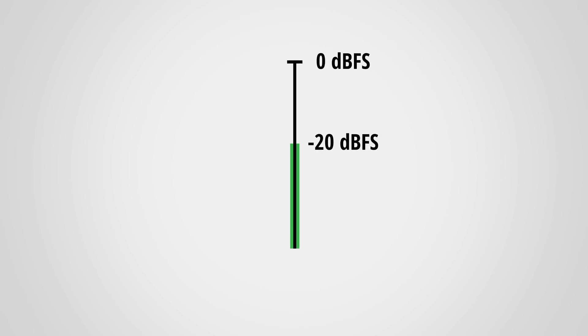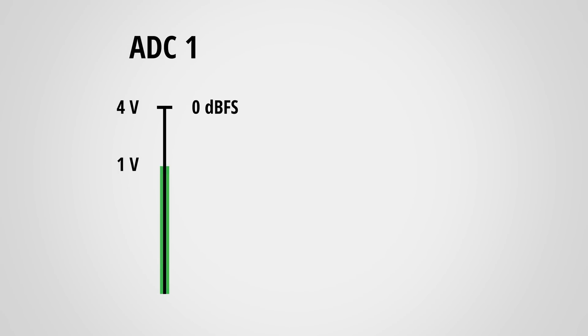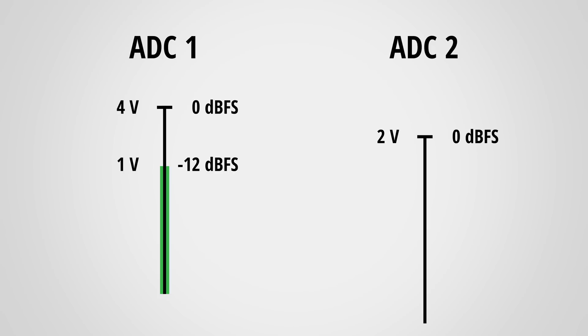If the full scale value were to change, the whole scale would change accordingly. Now you might ask yourself: where exactly is this full scale — which analog signal level, so how many volts, results in digital full scale? Let's say you had an analog-to-digital converter with a full scale equal to 4 volts and you run a 1 volt signal into this converter. It would output a digital signal of minus 12 dBFS, because 1 volt is a quarter of 4 volts which is 12dB less. If you run the same 1 volt signal into a different converter with a full scale equal to 2 volts, the resulting digital signal would be minus 6 dBFS, because 1 volt is half of 2 volts. The point is that where the full scale level sits in the analog world has a huge impact on the resulting digital signal level.